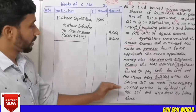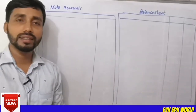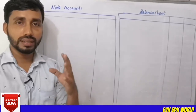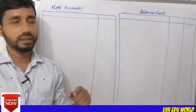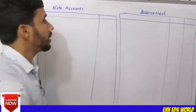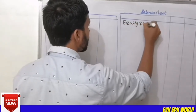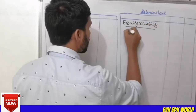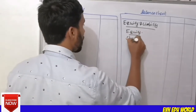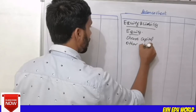I will now list the share forfeiture journal entry and also prepare the balance sheet. In the case of the company, we will prepare the balance sheet as part of the financial statement of companies. The balance sheet has two parts: equity and liabilities, and assets. Under equity: share capital and other equity.